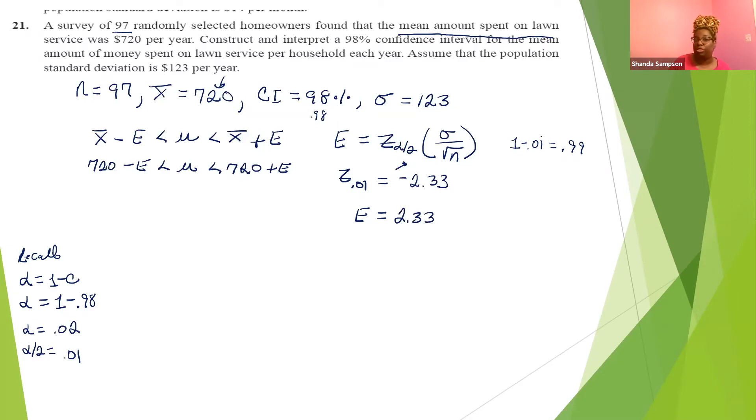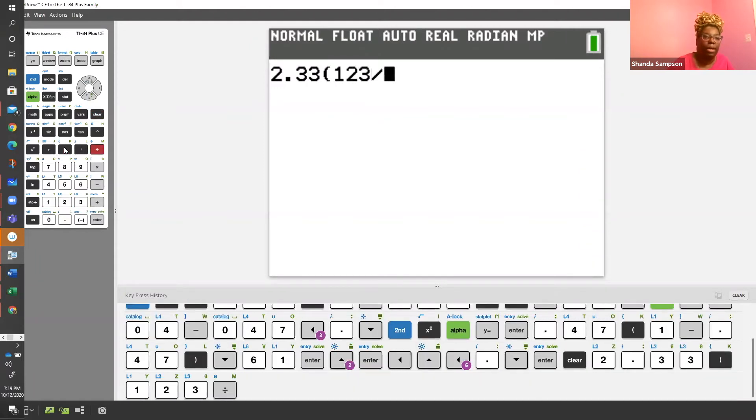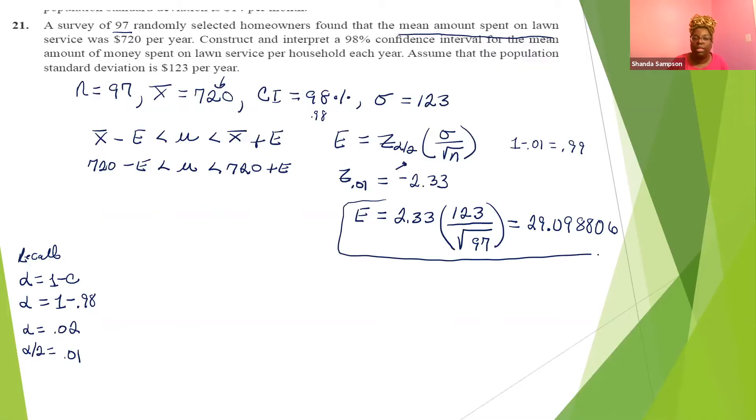You should be using it because you were supposed to do one minus that and you would have gotten positive 2.33. At this point, you have to show me what your error is to six decimal places. So let's switch over to the calculator. 2.33 times 123 divided by the square root of 97 equals 29.098806 because you have to round the last one up. So this is the correct answer for your margin of error. You must get your margin of error, show me the margin of error. You get credit for your proper Z alpha over two, your proper formula and rounding your margin of error to the right numbers.